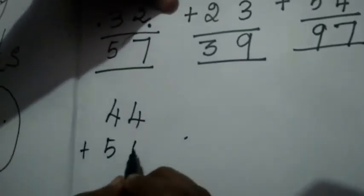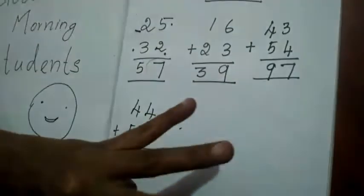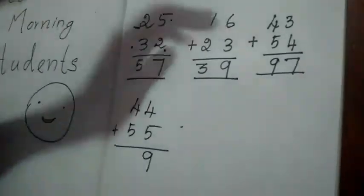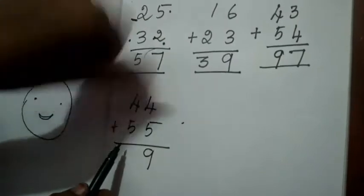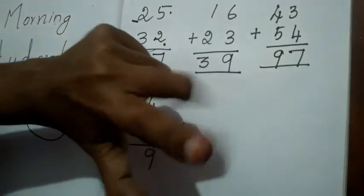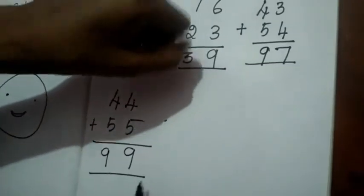44 plus 55. Here 4 and 5 — first-digit numbers. 4 in your mind, take 5 on your finger. 4 after: 5, 6, 7, 8, 9. Then for the second-digit numbers, again 4 and 5. 4 in your mind and 5 on your finger. 4 after: 5, 6, 7, 8, 9. Answer is 9. Total answer is 99.